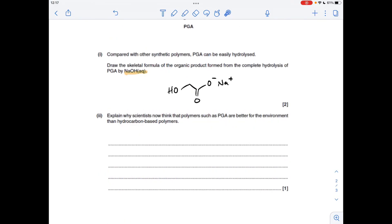And the final part of the question, so why do scientists think the polymers such as PGA are better for the environment compared to hydrocarbon based ones? It's all down to the fact that hydrocarbon based polymers don't decompose, they're not biodegradable, whereas we've just been told that this is easily hydrolyzed, so it's going to break down in the environment and therefore it is biodegradable.